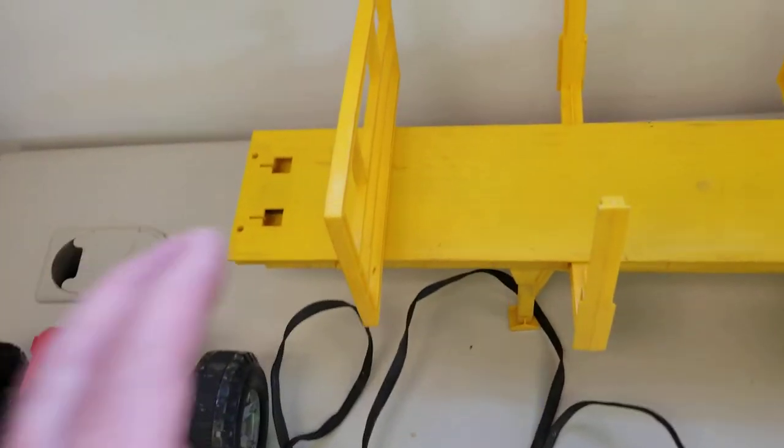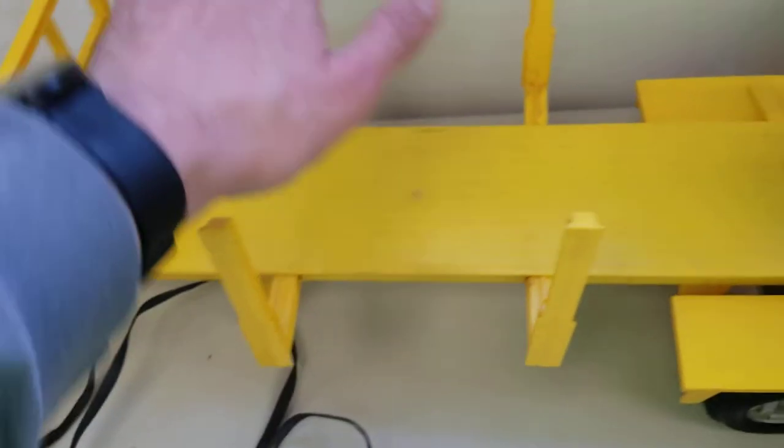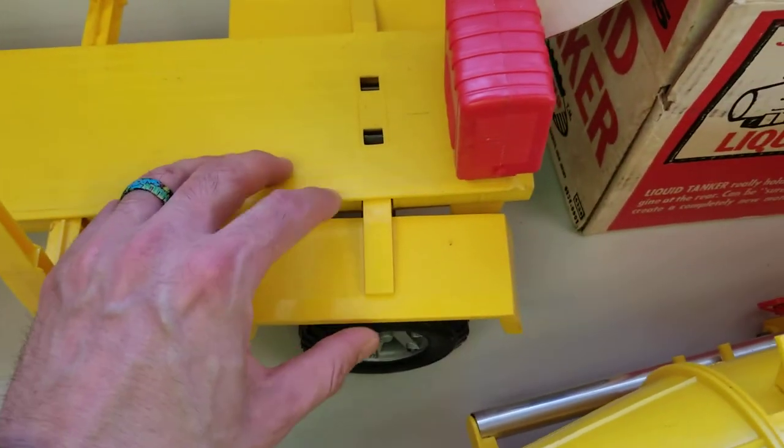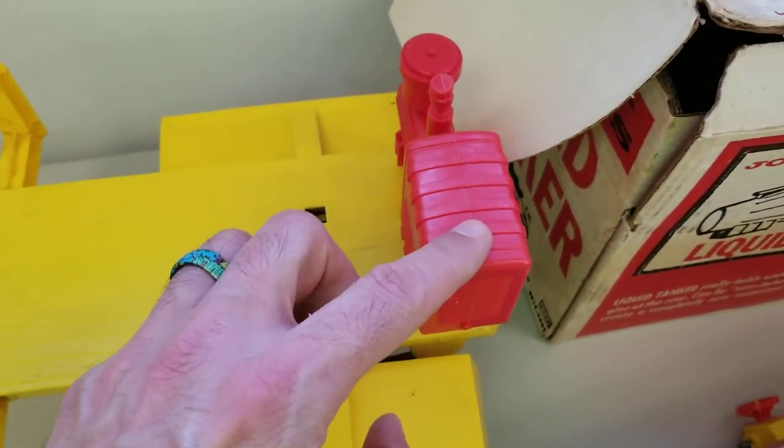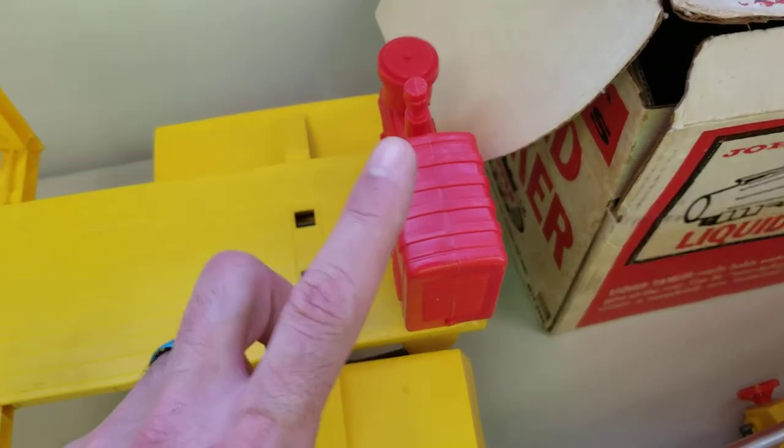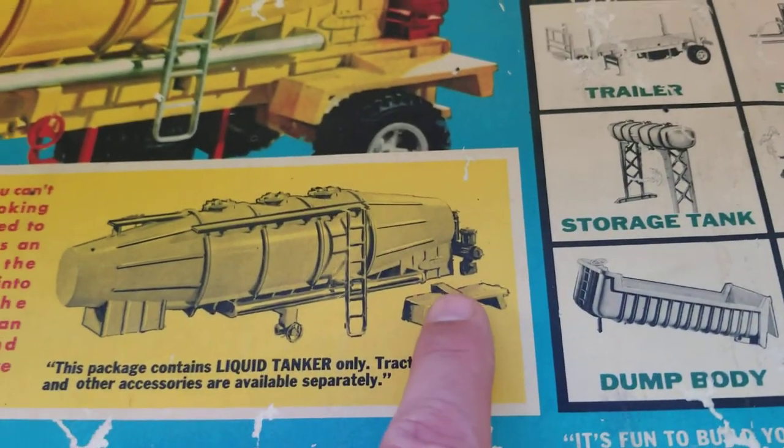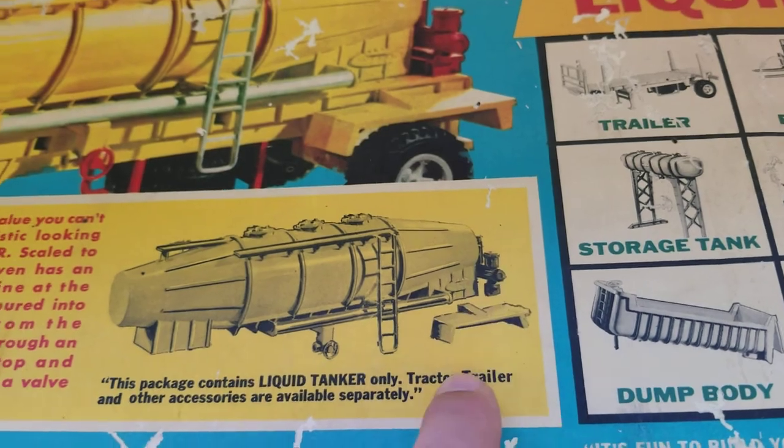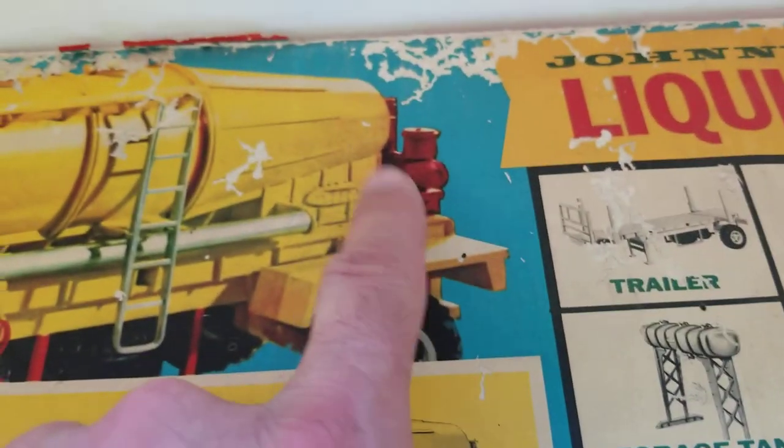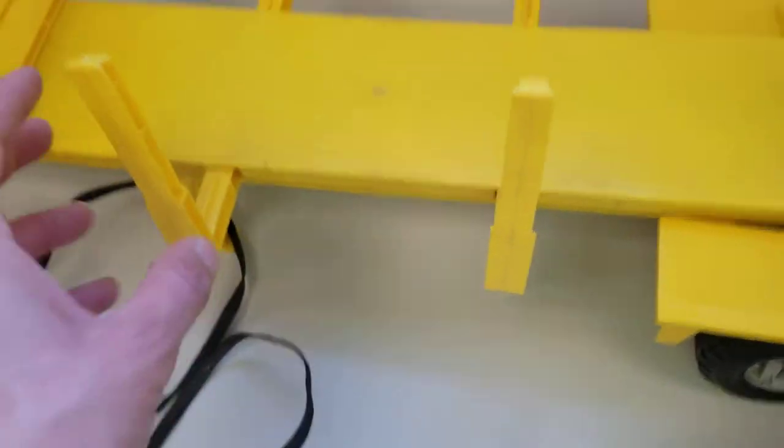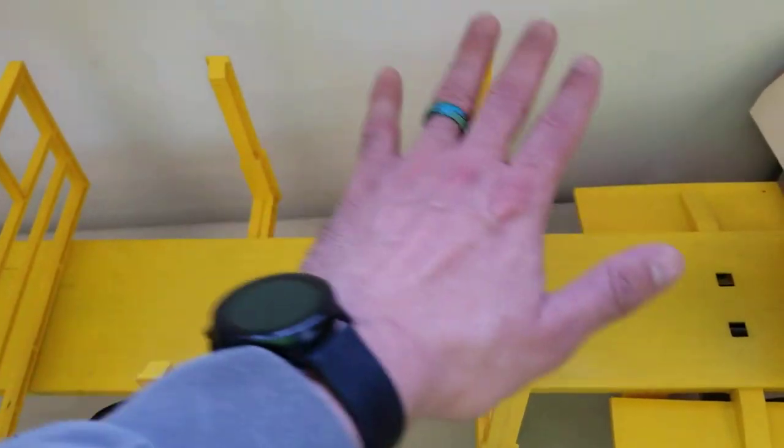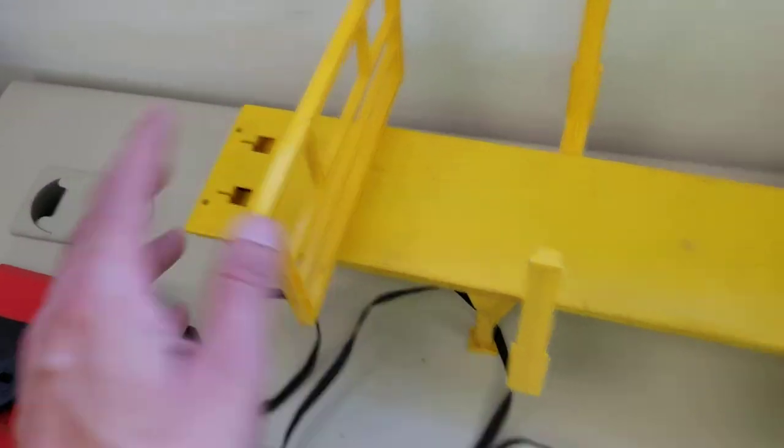So the trailer has its parts. I believe these two and this go with the liquid tanker. The liquid tanker shows that those two parts go with it there, so there and there. I believe the trailer itself came with these four and then that one.